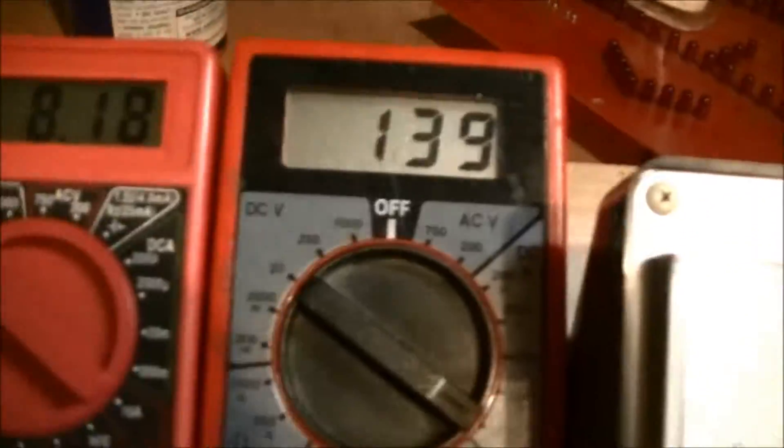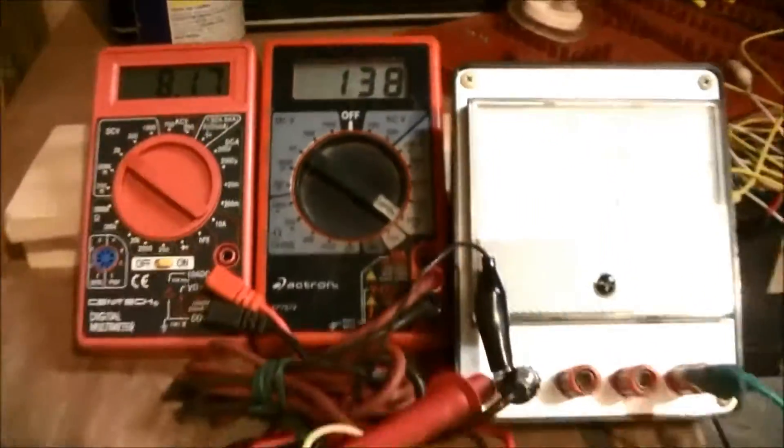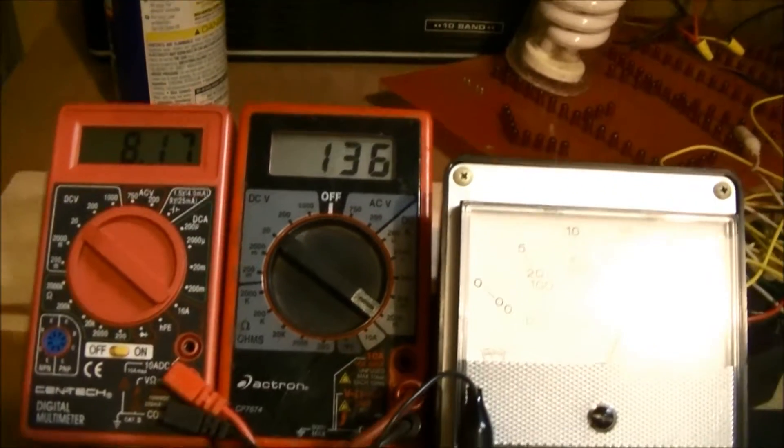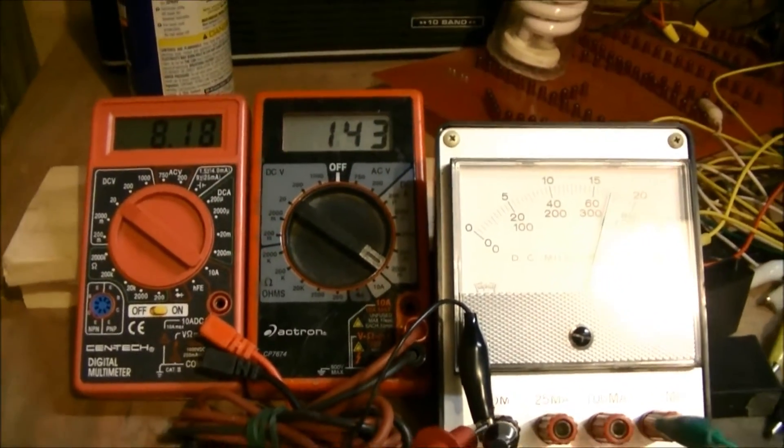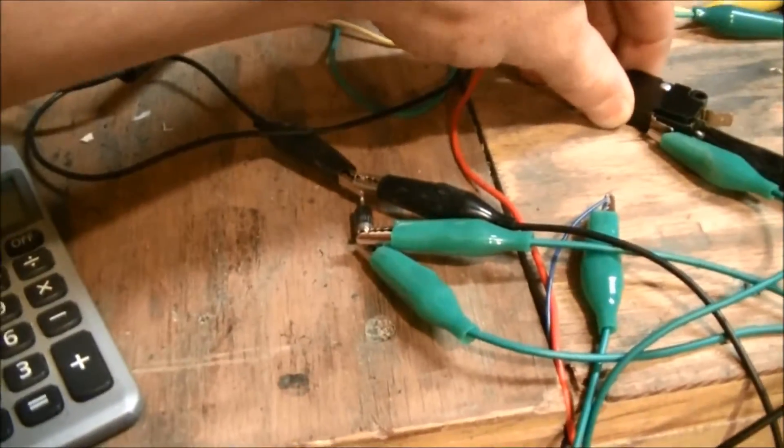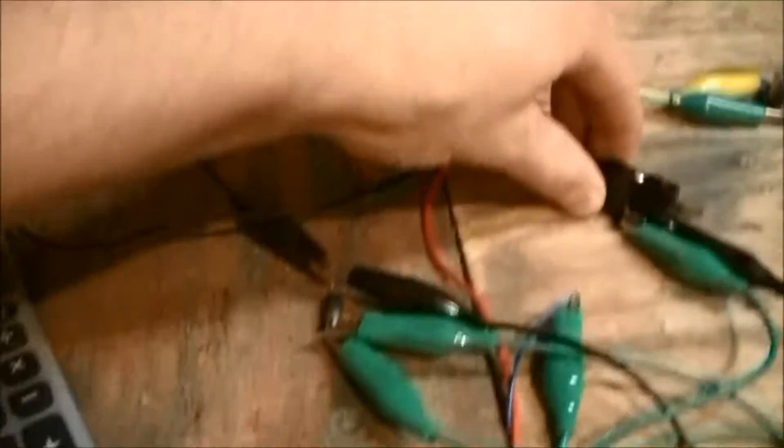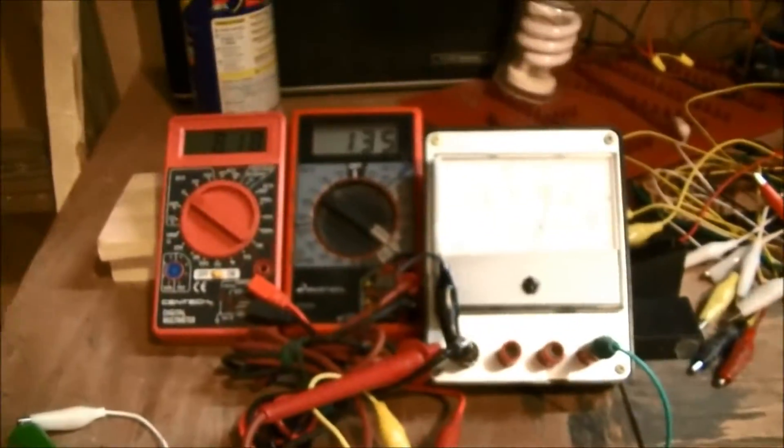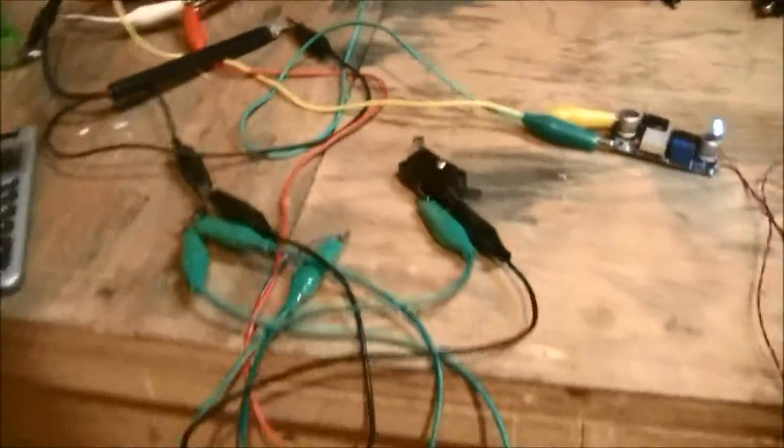So yeah, now there's current out of the Stirling engine. Actually if you click the switch while the Stirling engine is running, it actually puts a little bit more power into the battery because the diode has some resistance, so it's not perfectly efficient.